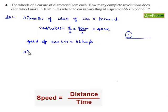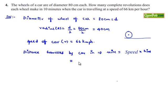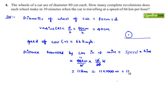Therefore, the distance travelled by the car in 10 minutes is equal to speed into time, that is equal to 66 kmph into 10 minutes. Let us convert minutes into hours by dividing by 60. So 10 over 60 goes into 66: 6 goes into 66 eleven times, that is equal to 11 km. Let us convert this into centimetres: 11 into 1000 metres into 100 cm, that can be written as 11 into 10 power 5 cm.